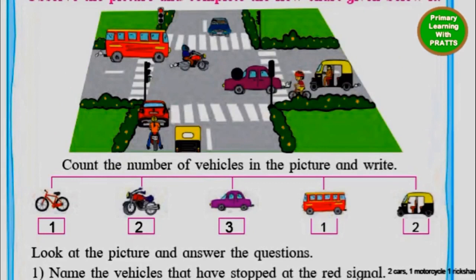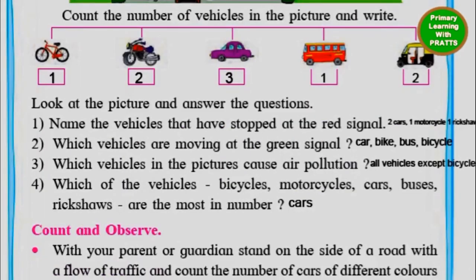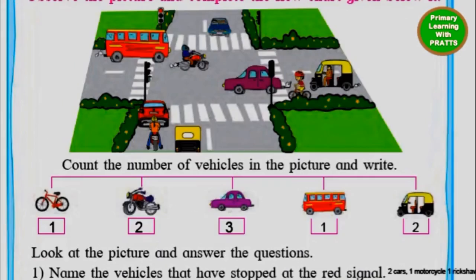Which vehicles are moving at the green signal? We can see moving: bicycle, car, motorcycle, bus, and auto rickshaw. So we write all five of them — car, motorbike, bus, bicycle, and auto rickshaw. There is also an auto rickshaw moving at the green signal, so we add auto as well.